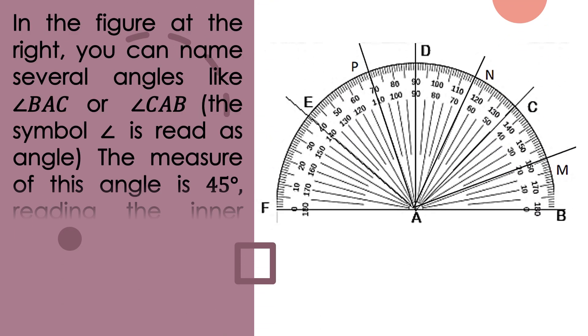So let's have an example. In the figure at the right, you can name several angles like angle BAC or CAB. So in our protractor, angle BAC can also be named CAB. This symbol is read as angle. The measure of this angle is 45 degrees reading the inner scale.